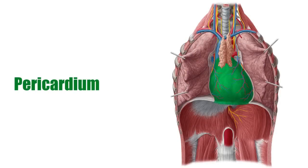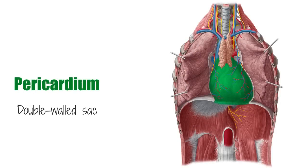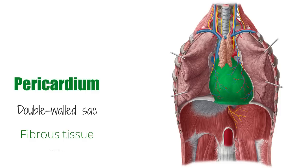The pericardium, seen here highlighted in green, is a double-walled sac that encloses the heart, the pericardial fluid, and the roots of the great vessels, and is situated within the middle mediastinum. The pericardium has one layer made of fibrous tissue and one made of serous tissue. Its function is to lubricate the moving surfaces of the heart. And in this video, the anatomy of the pericardium will be discussed in detail.